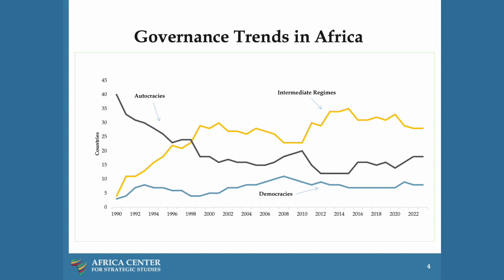In contrast, for leaders in countries that uphold term limits, the average time in office is about four years. We've also seen that when leaders stay in office more than two terms, the track record has been that they become progressively more repressive, corrupt, and unstable. In fact, 40% of the countries where leaders have evaded term limits are in conflict — contrasting to just 7% for countries where leaders have respected term limits.